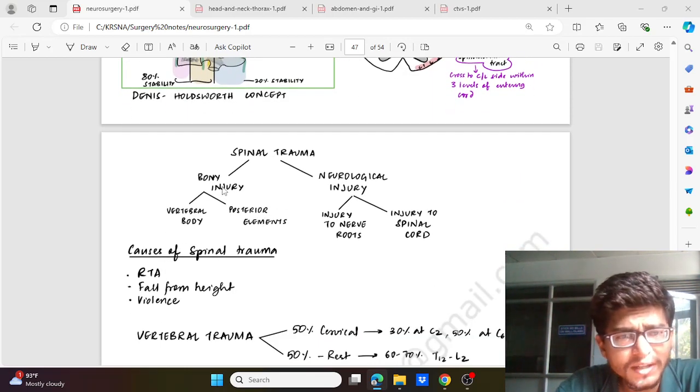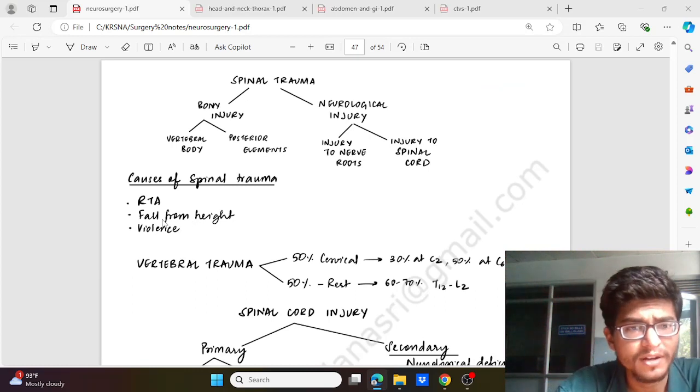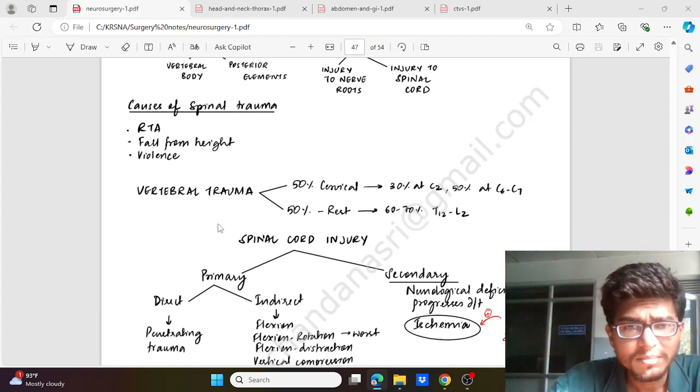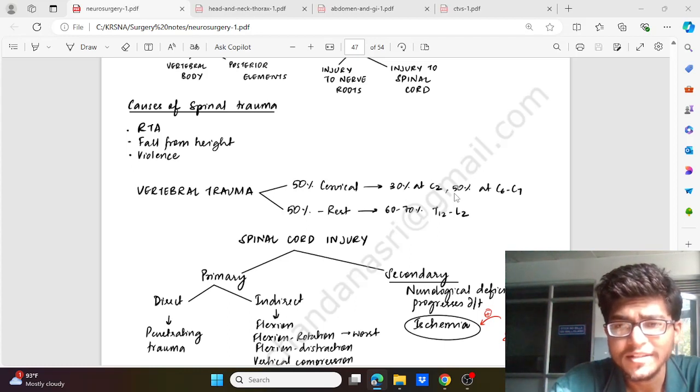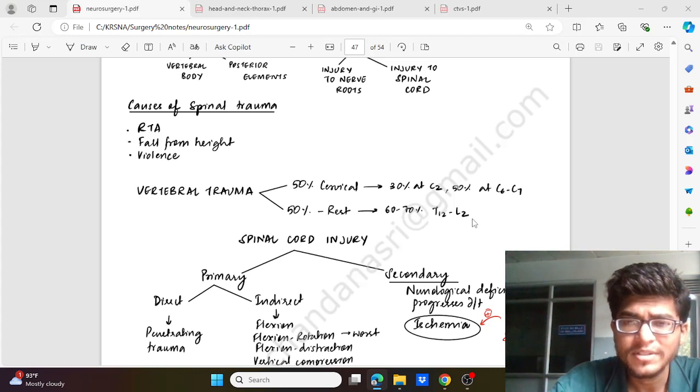Then spinal trauma - there could be bony injury to the vertebral body or the posterior elements, the processes, or neurological injury to the nerve, cord roots, or the spinal cord. The cause could be RTA (road traffic accident), fall from height, or wall injury. Vertebral trauma most commonly occurs in 50 percent cases in the cervical region, of which 30 percent is at C2 and 50 percent at C6 and C7. The rest 50 percent is commonly, 60 to 70 percent, in the thoracolumbar vertebra, that is T12 to L1.